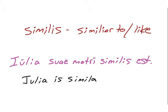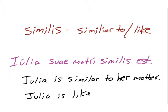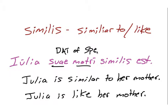Julia suae matri similis est. Julia is similar to her mother, or in English we would probably say Julia is like her mother. This is dative of special adjectives.